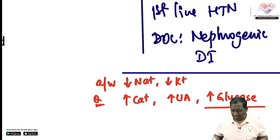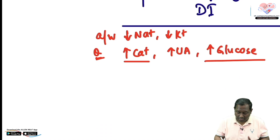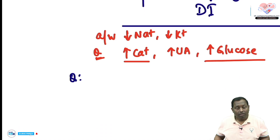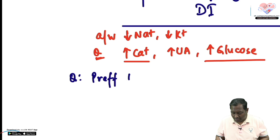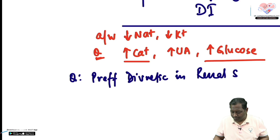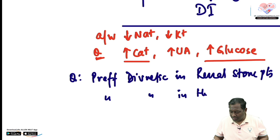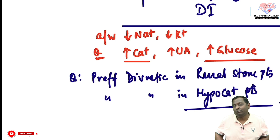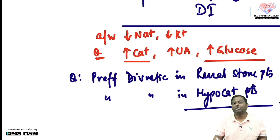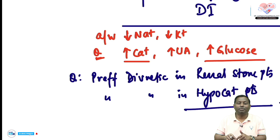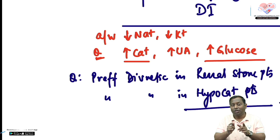Side effects summary: hyperglycemia, hyperuricemia (precipitating gout), and hypercalcemia. The next potential MCQ: which diuretic is preferred in renal stone patients? Thiazides are also preferred in hypocalcemic scenarios — if a patient needs a diuretic and has a history of hypocalcemia, we can use thiazides. However, do not rely completely on thiazides for treating hypocalcemia, as it is an emergency requiring faster-acting agents.